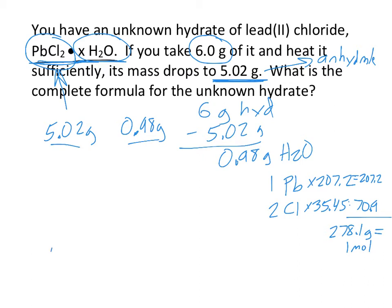So if you have 5.02 grams of PbCl2, remember this is without the water on it, for every one mole there are 278.1 grams. So we can figure out how many moles of PbCl2 we have. So 278.1, I'm dividing, I get 0.018 moles. So there are 0.018 moles of the PbCl2 only.